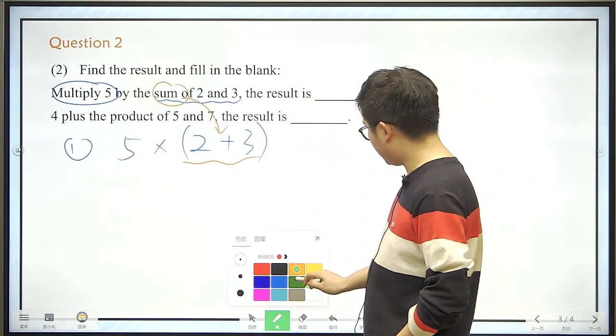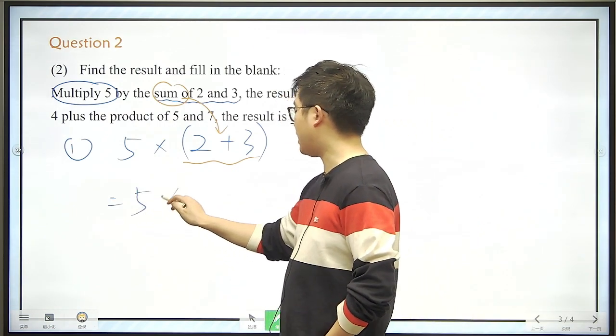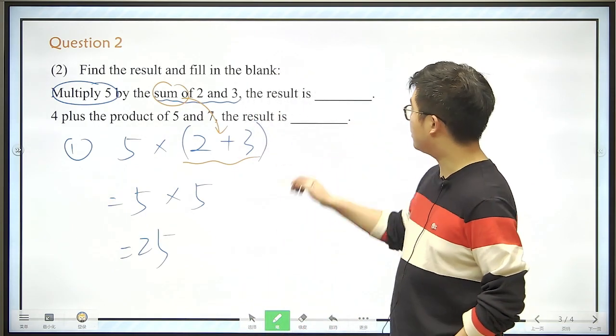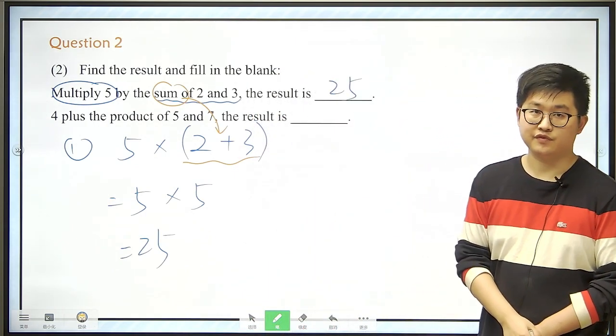Alright, so we just continue, this would be very easy, it's 5 times 5, the answer would be 25 here. So 25, we just write it here, that's done.